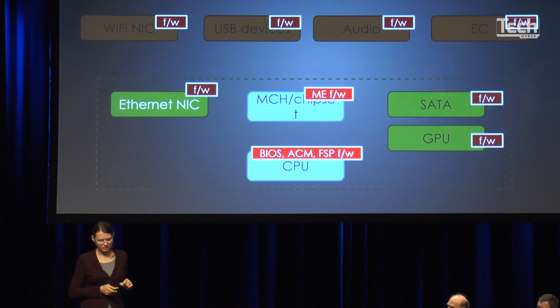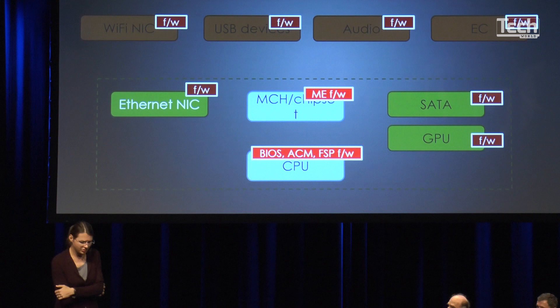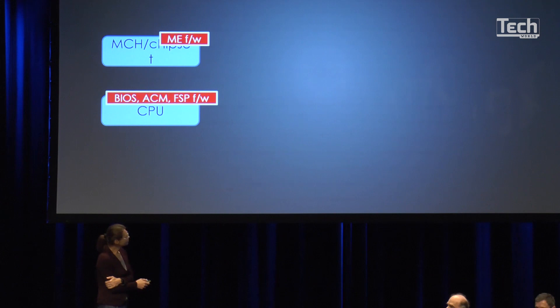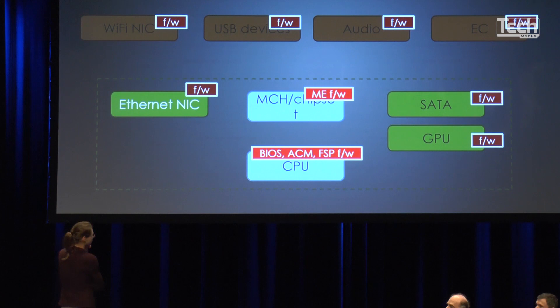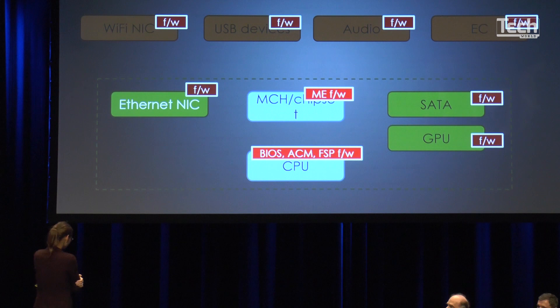The SATA and GPU could theoretically be put outside of the TCB, but we have not done it so far for reasons not completely dependent on us. To put the SATA controller out of the TCB, we would need reliable trusted boot, which is not possible still, as I'm going to talk about in a moment. For GPU, we are working on that and might put it in the next major version. But still, the CPU and the memory controller hub — the chipset — are really a pain.